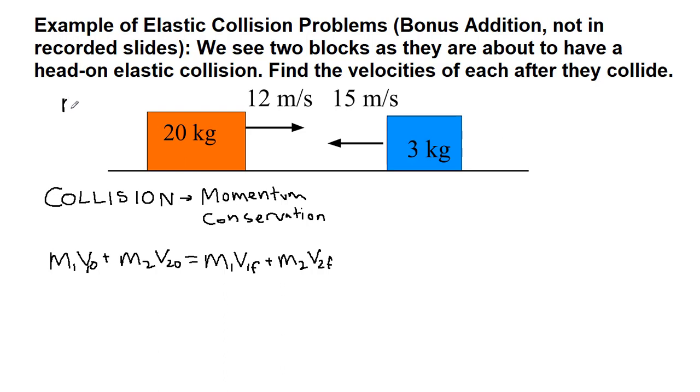Now, if we choose this to be mass 1, mass 1 is 20 kilograms, and the initial velocity for it is positive because it's going to the right, and we're just going to use that as our default positive direction, 12 meters per second.